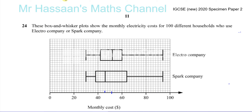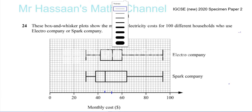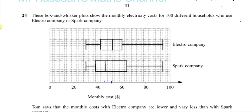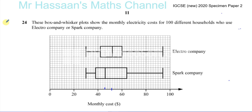Question number 24. This is another topic which is new in the syllabus, which is box and whisker plots. This is new for the IGCSE new 2020 syllabus. This is question 24 from the specimen paper for that syllabus. It's about box and whisker plots, which is something to do with statistics. These box and whisker plots show the monthly electricity costs for 100 different households who use Electro Company or Spark Company. So each of these contains 100 sets of data.